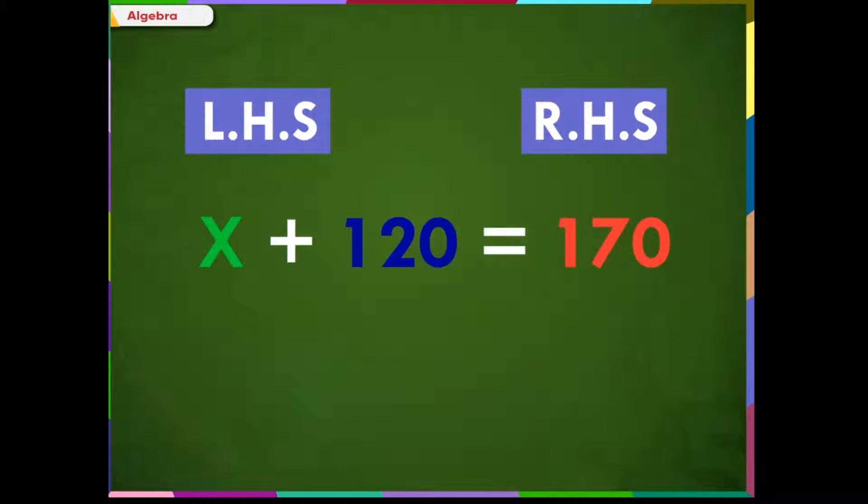In this equation, the quantity x plus 120 is the LHS and the quantity 170 is the RHS. It is important that the value of these two quantities should always be equal. Then only we can say that the equation is true. Let us understand this with the help of a beam balance.